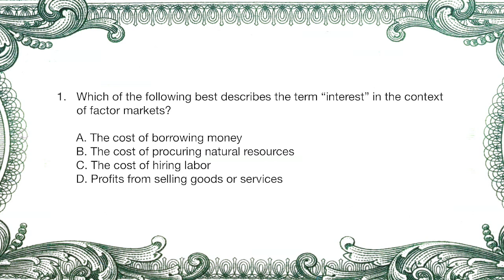Question one. Which of the following best describes the term interest in the context of factor markets? A, the cost of borrowing money. B, the cost of procuring natural resources. C, the cost of hiring labor. Or D, profits from selling goods or services.